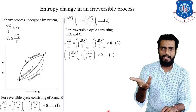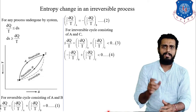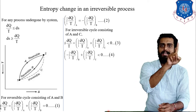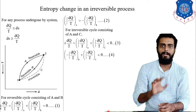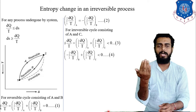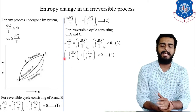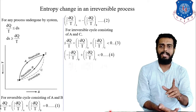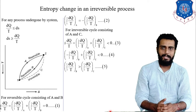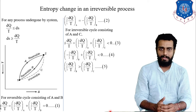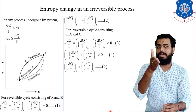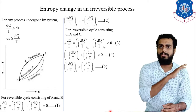Rearranging equation 4, we can write that the integral from 2 to 1 of dq/T along path B is greater than the integral from 2 to 1 of dq/T along path C. Now, path B is reversible, and if the path is reversible, then the integral of dq/T gives us the entropy change — that is equivalent to dS.